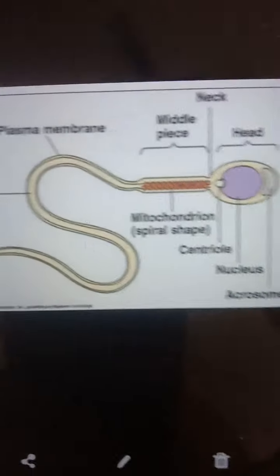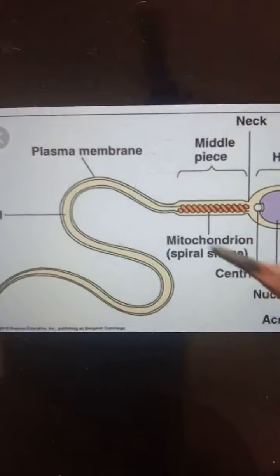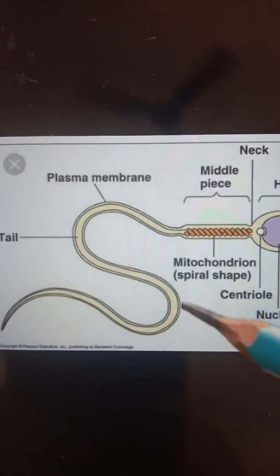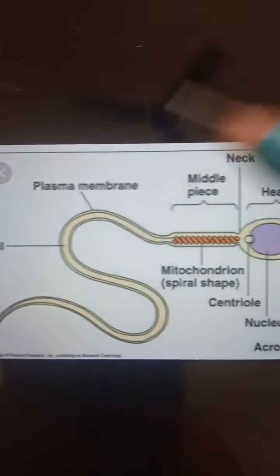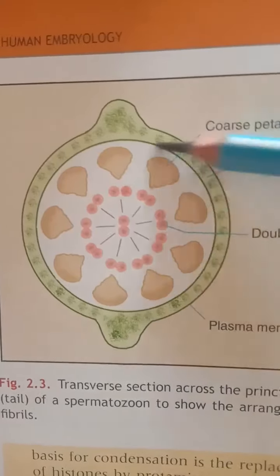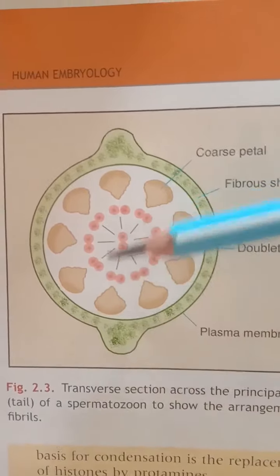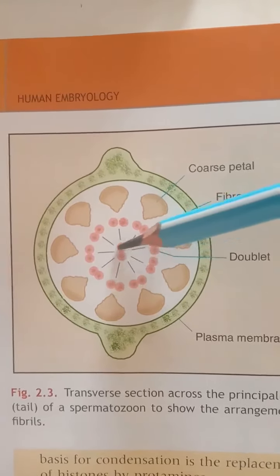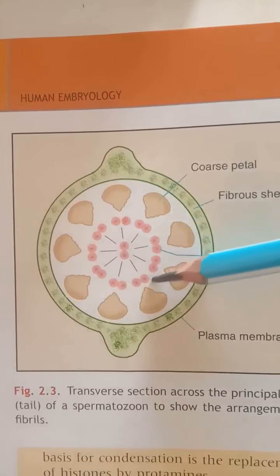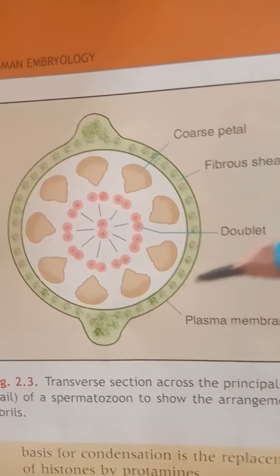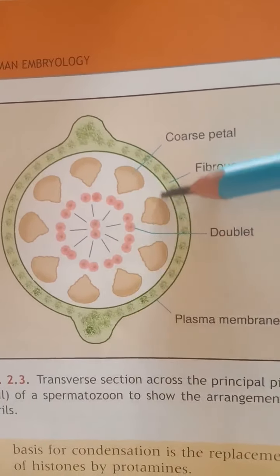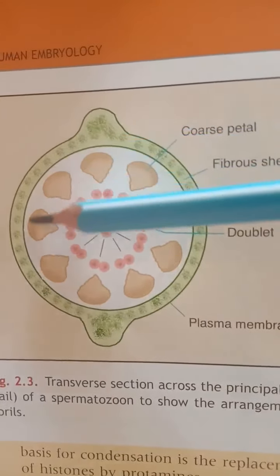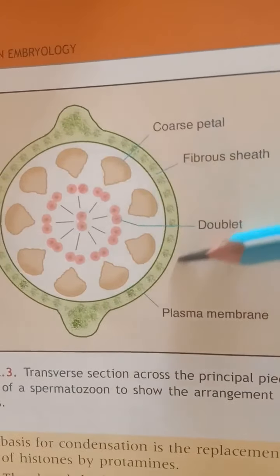Here in this diagram you can see the outer covering — that is the plasma membrane — and the axial filament which starts from the middle piece and extends throughout into the principal piece or tail of the spermatozoa. Here you can see the transverse section across the principal piece of the spermatozoa. Centrally there is a pair of axial filaments covered by nine pairs called the doublets. On the outer side are coarse fibers, and outermost is the fibrous sheath.